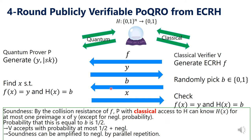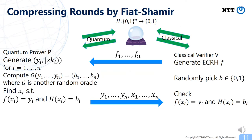We observe that the third-round message B is just a public coin. So by using the standard technique of Fiat-Shamir transformation, we can reduce the number of rounds of the protocol. We consider the parallel repetition version of the previous protocol, and then derive the challenges B1 to Bn by using another random oracle G. We can then compress the protocol to a two-round protocol, and by the standard technique we can reduce the soundness of this two-round version to the soundness of the four-round version. We now obtain a two-round publicly verifiable PoQRO from ECRH.